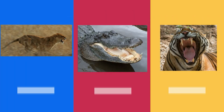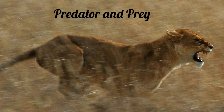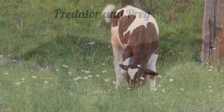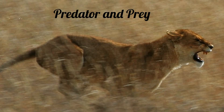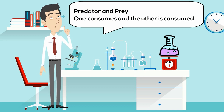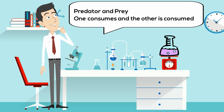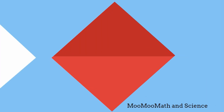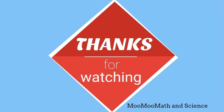This may seem strange, but even this cow eating the grass is a predator-prey interaction. The cow is the predator and the grass is the prey. So there you go — an ecological interaction, predator vs prey: one consumes and the other is consumed. Thanks for watching, and Moo Moo Math uploads a new math and science video every day. Please subscribe and share.